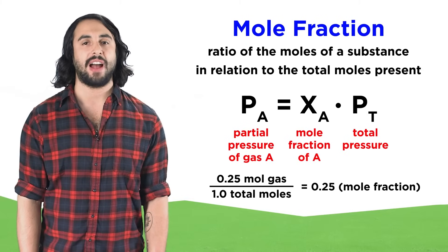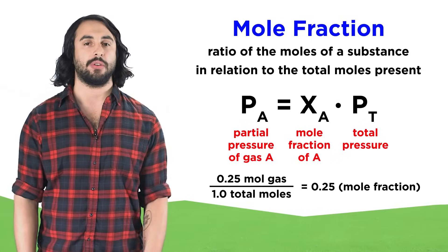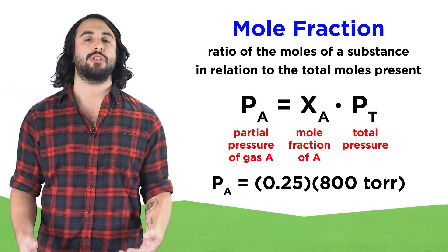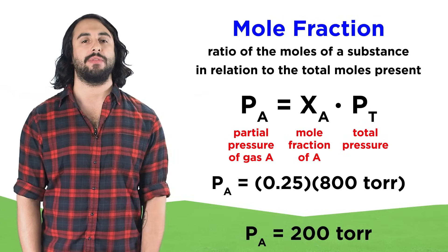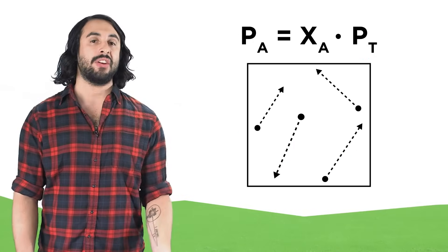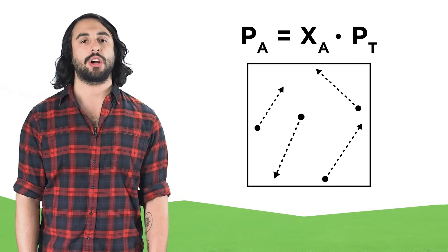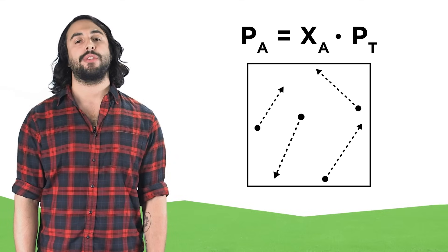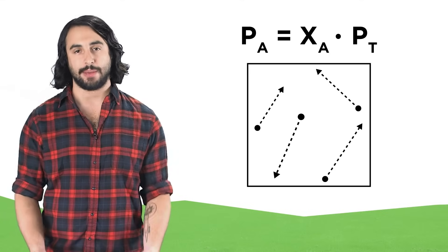So if there were 0.25 moles of a particular gas out of one mole of total gas particles, that would mean a mole fraction of 0.25. This makes sense on the molecular level when we consider individual collisions occurring between the particles and the sides of the container, and the fraction of these collisions that is represented by any individual substance.